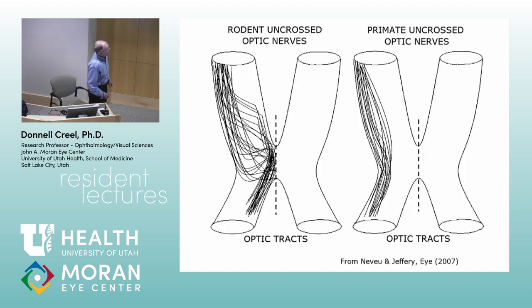In the primate visual system you have this orderly bundle of uncrossed fibers. Whereas in rodents, rabbits, and lower mammals, they're sort of haphazard — they come to the chiasm and then bounce away from it. That's how the organization appears if you look at embryonic development.